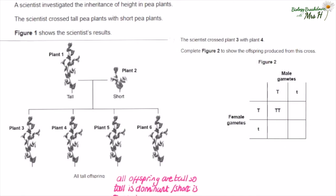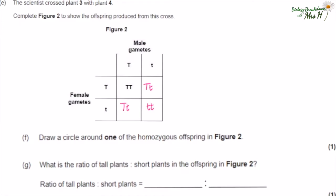The scientist crossed plant three with plant four. Complete figure two to show the offspring from this cross. TT has already been done; then we can do Tt, Tt, and tt — remember to put the capital letter first. Draw a circle around one of the homozygous offspring — I've drawn it around tt, but you could also circle TT. What is the ratio of tall plants to short plants in the offspring? TT is tall, Tt is tall, and tt is short — so they are in a three to one ratio: three tall to one short.